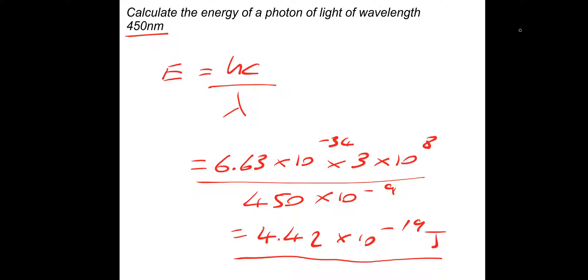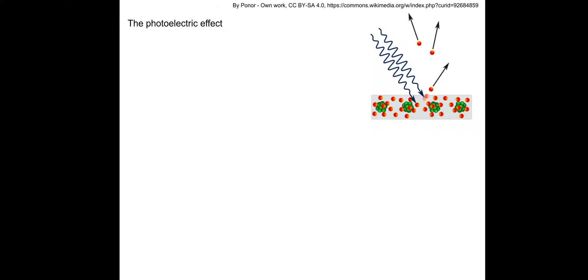Let's move on to the next bit: the photoelectric effect. What I'm going to do is discuss this in a broad manner and then I've got some notes here to take. So essentially the photoelectric effect is where we shine light or photons onto a metal surface and eject the surface electrons from the surface of the metal.